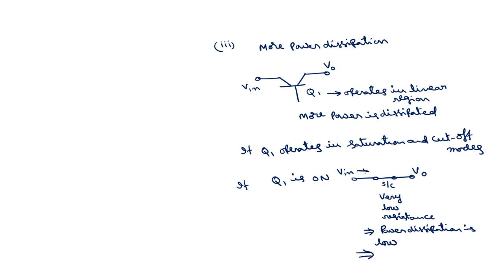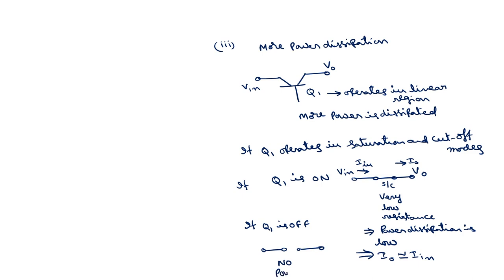As a result, the entire input current Iin will be transferred to the load, so Iout is approximately equal to Iin, and maximum power is transferred. If Q1 is off, it acts as almost an open circuit, so no power is dissipated. With the input in the form of pulses, the power dissipation will be less if we operate Q1 in saturation and cutoff modes.